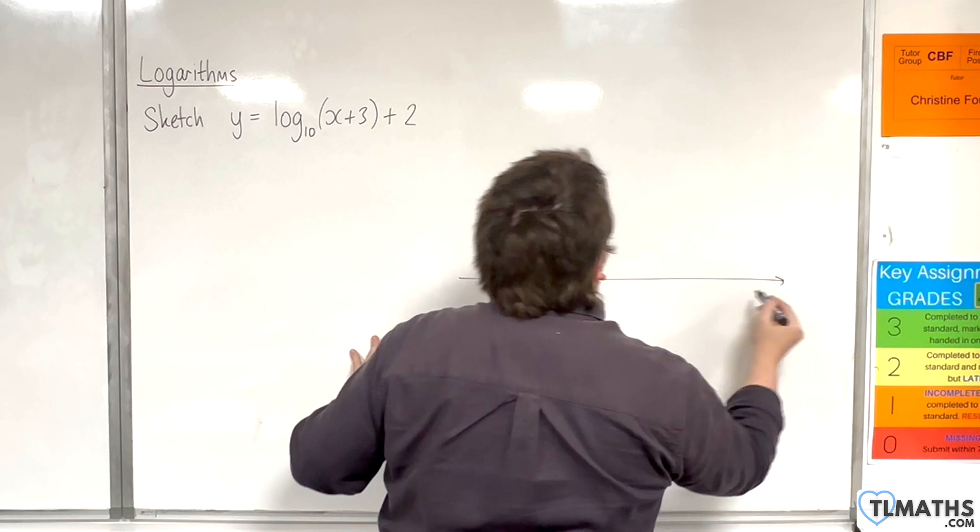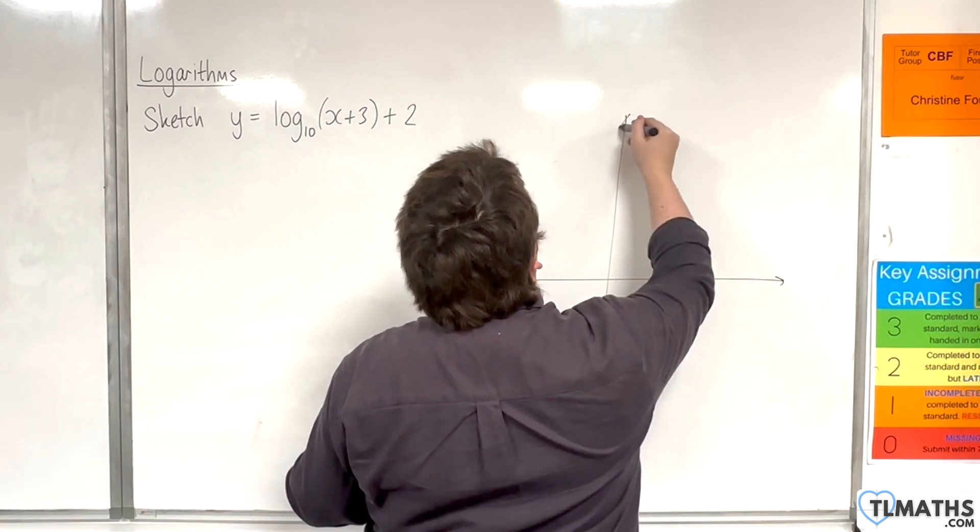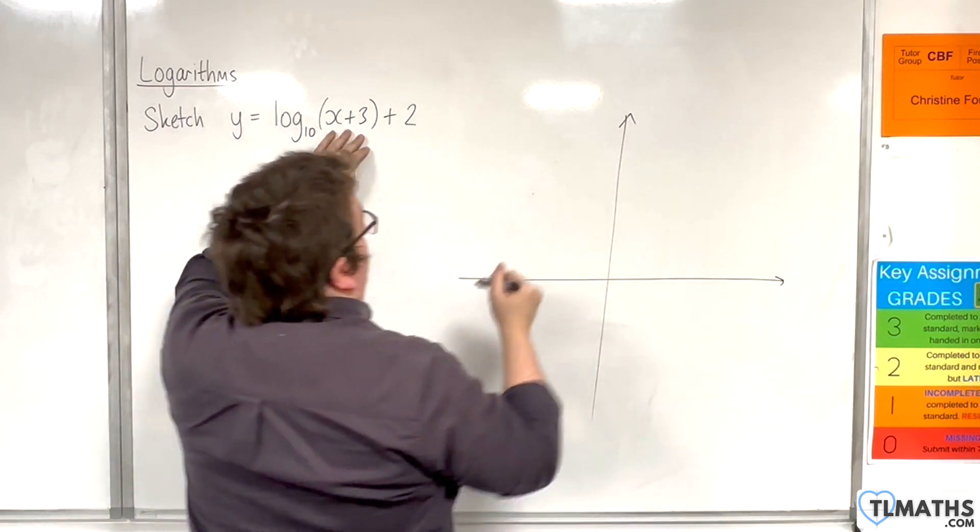So first of all, identify where the vertical asymptote is, and that will be when x is minus 3 to make that bracket 0.